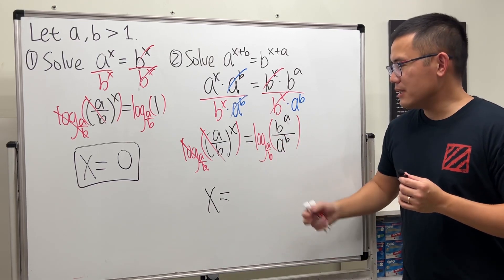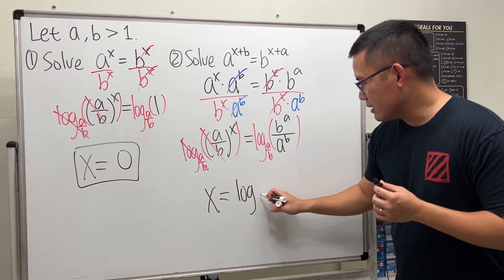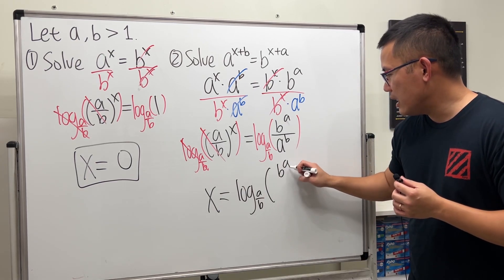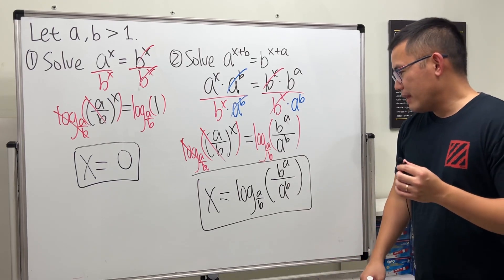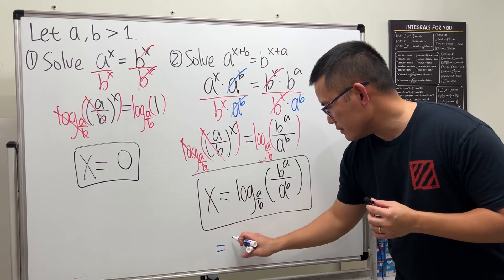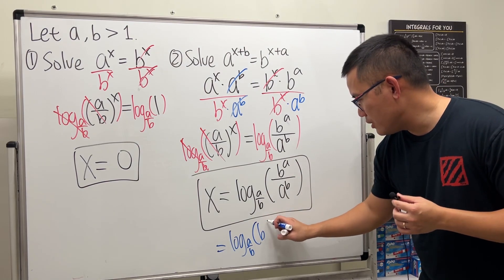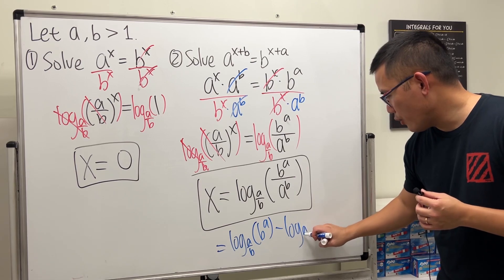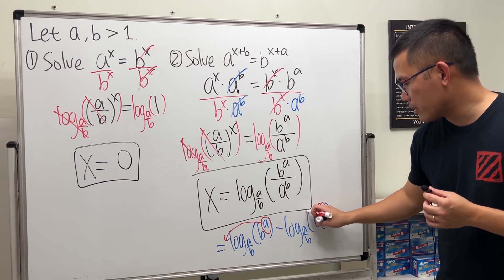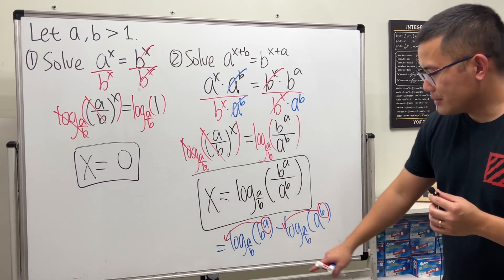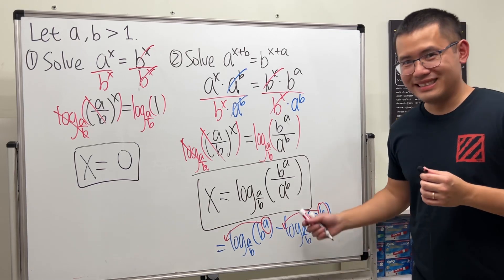It depends on how you want to simplify this. If you expand it, it's just going to be bigger. If you keep it as it is, everything is more compact. I will first write it as log base a/b of (b^a / a^b). I would like to just box this - it looks pretty nice in my opinion. If you really want to simplify it, you can say log a/b of b^a minus log a/b of a^b, then put the powers to the front. You can do more rules of exponents, but I'm going to leave that to you guys. That's it for this video.